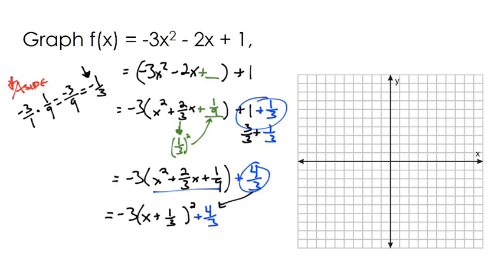So let's analyze each of these numbers. Let's look at what our a value does, what our h value does and what our k value does. So our a value, that's going to cause a vertical stretch because that three is going to stretch it. And since it's a negative, it's going to reflect it.